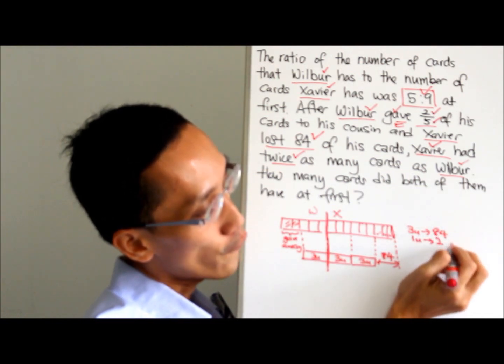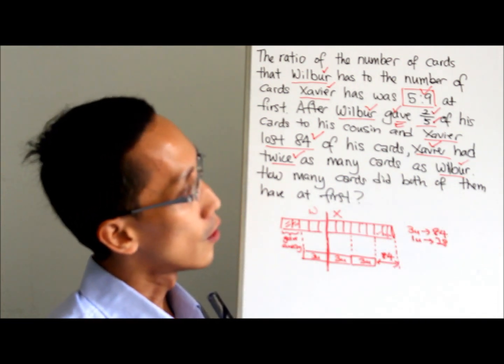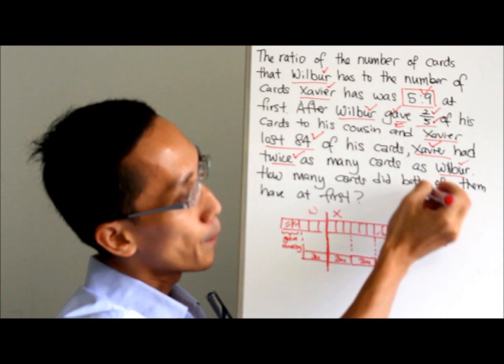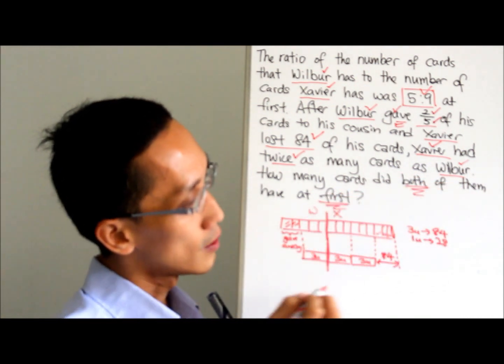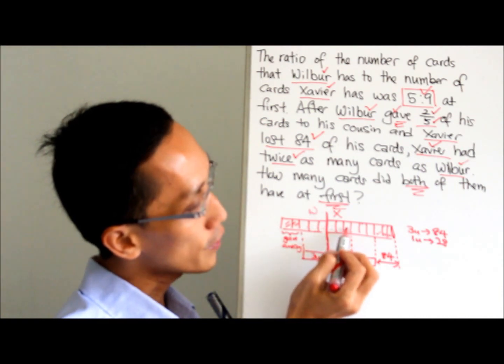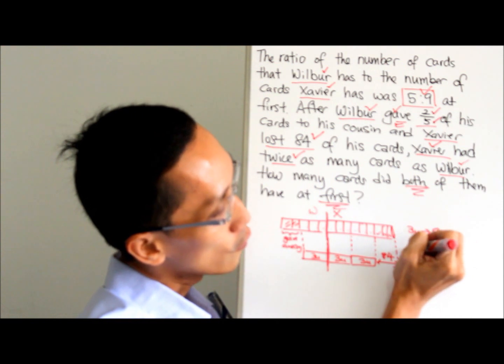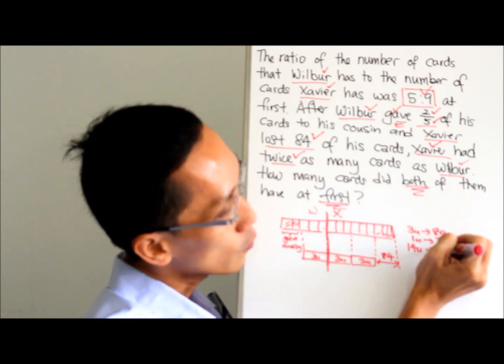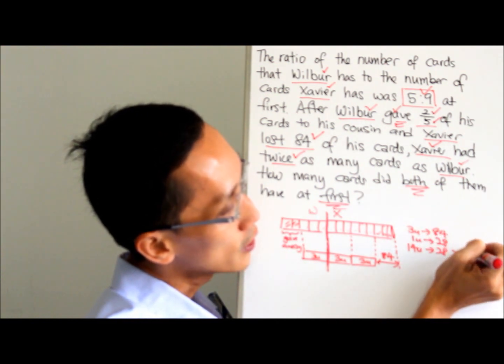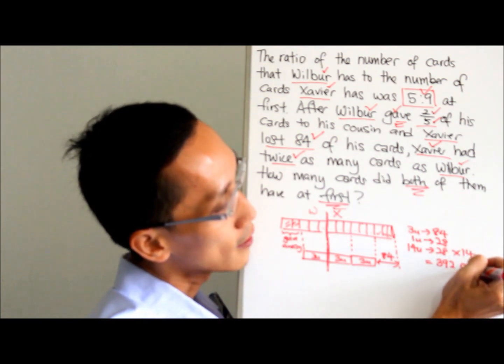So what does the question ask? Both at first. So you can do the counting: one, two, three, four, five, six, seven, eight, nine, ten, eleven, twelve, thirteen, fourteen. So 14 units will be 28 times 14 equals 392 cards.